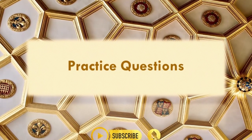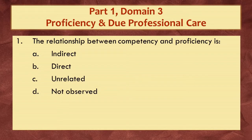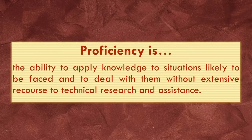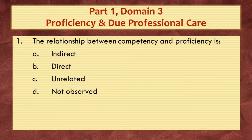Practice question one: The relationship between competency and proficiency is A) indirect, B) direct, C) unrelated, or D) not observed. Proficiency is defined as having the ability to apply knowledge to situations likely to be faced without extensive recourse to technical research and assistance. There is a built-in and direct relationship — one needs to be fully proficient first to become a fully competent person. The answer is B, direct.